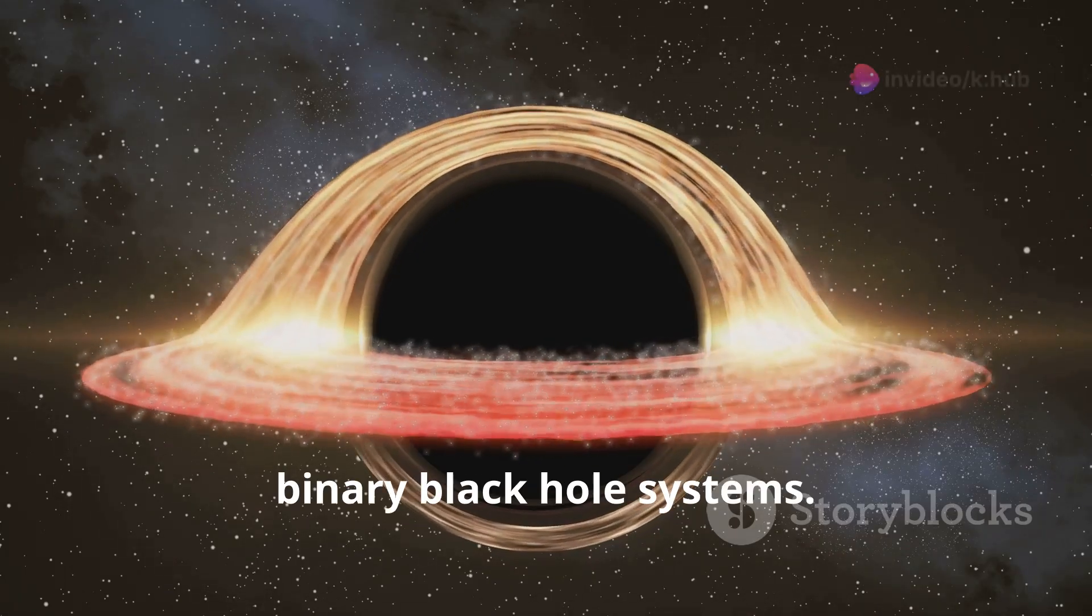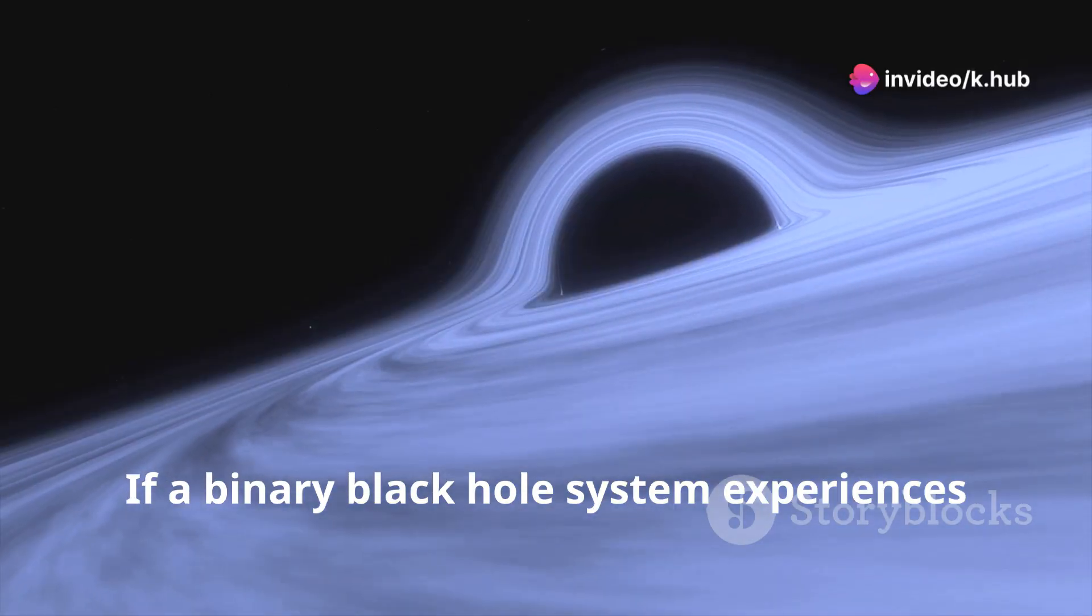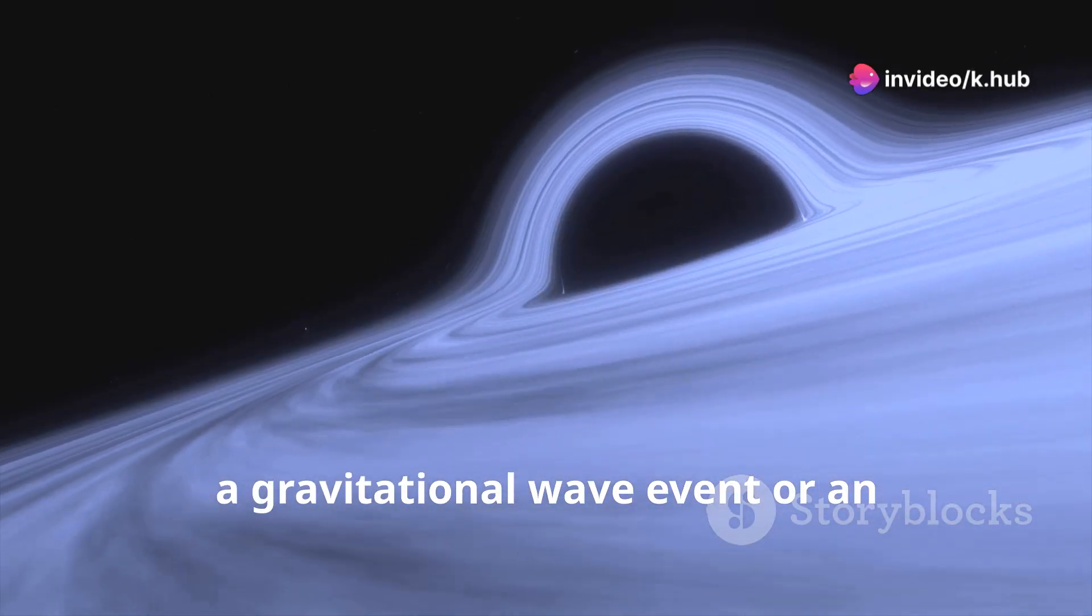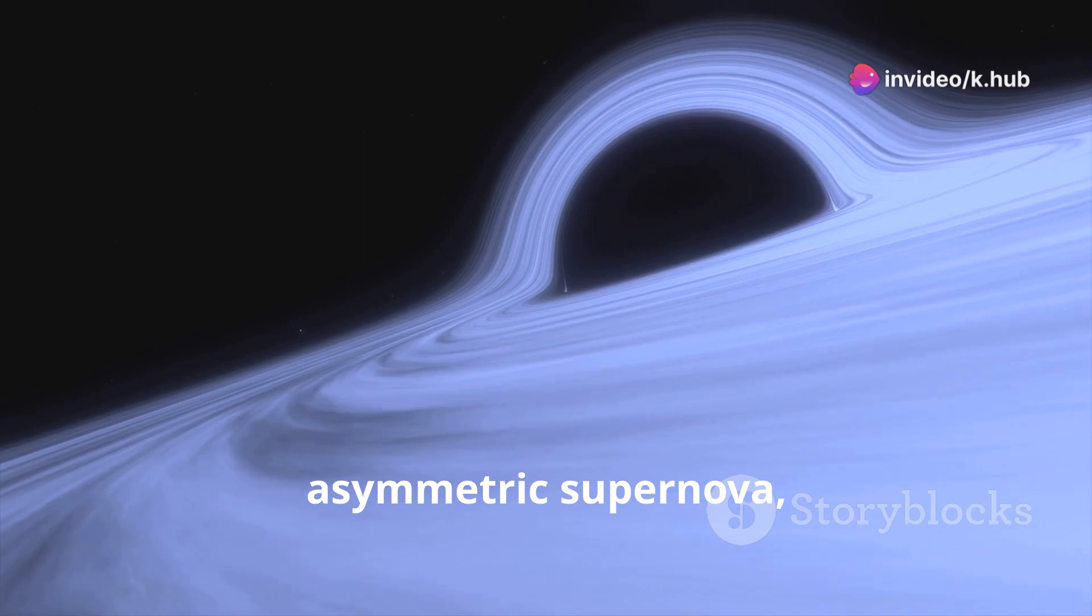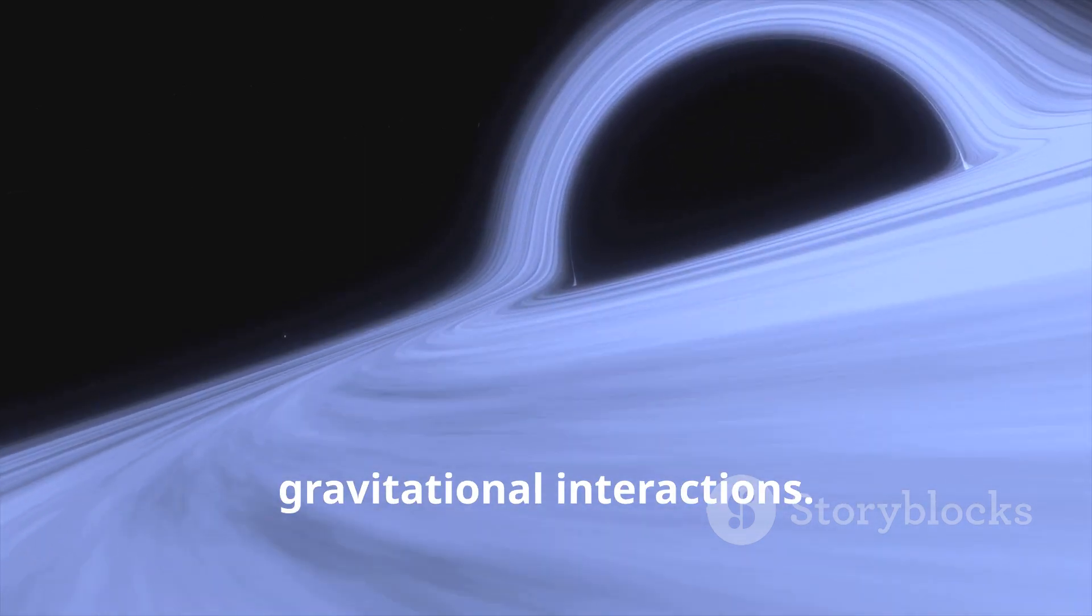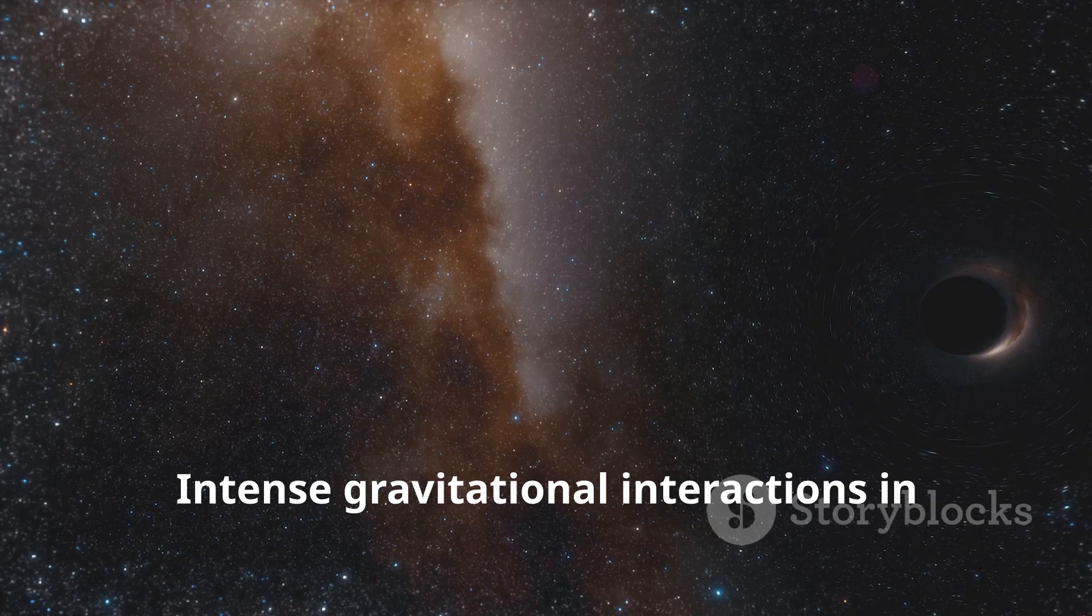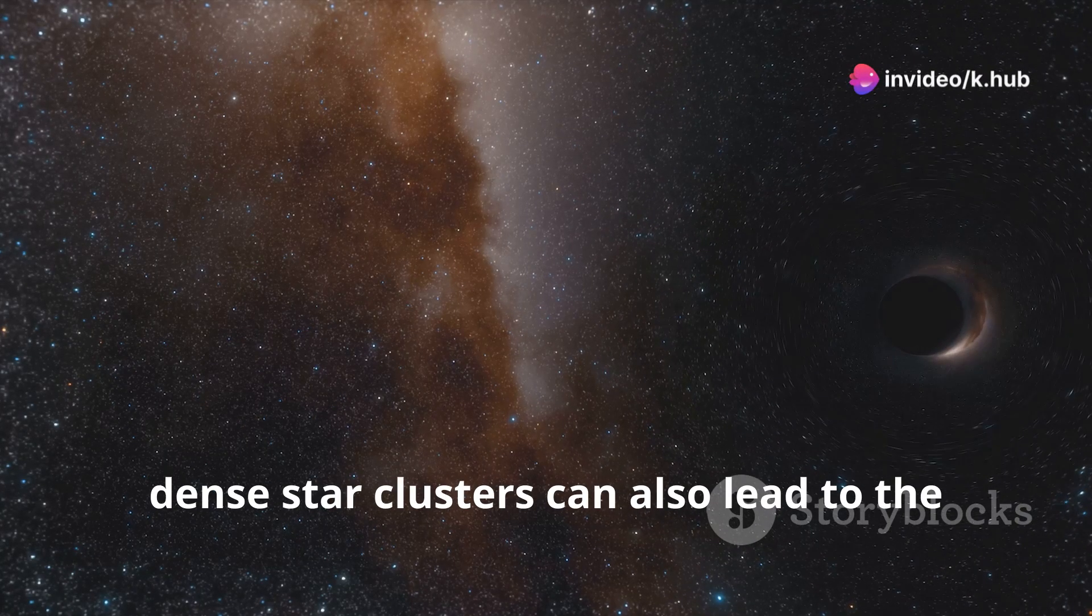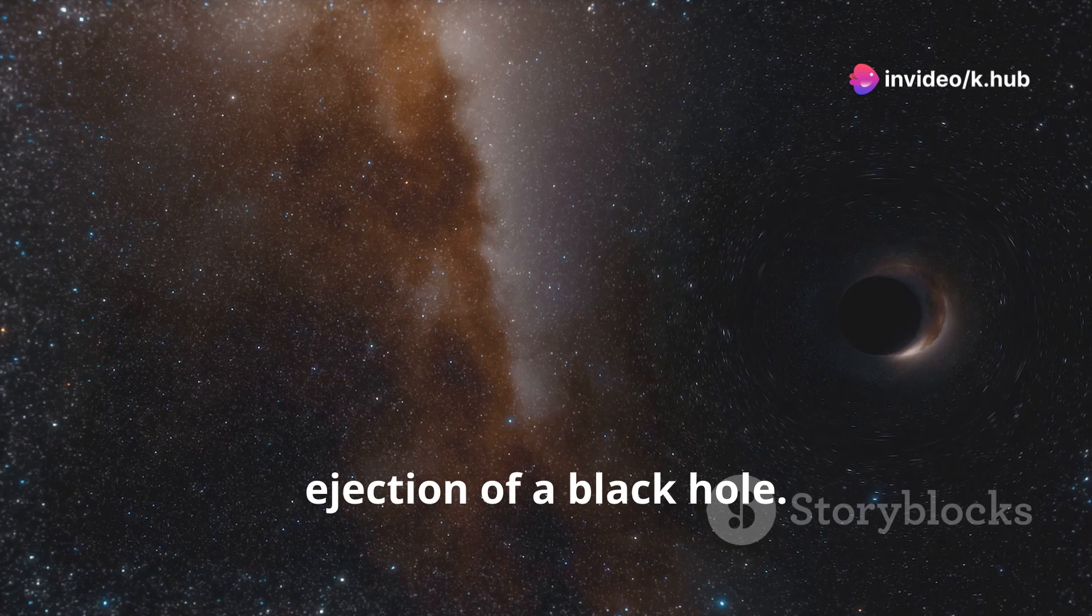Second, binary black hole systems. If a binary black hole system experiences a gravitational wave event or an asymmetric supernova, one of the black holes might be ejected at high speeds. Third, gravitational interactions. Intense gravitational interactions in dense star clusters can also lead to the ejection of a black hole.